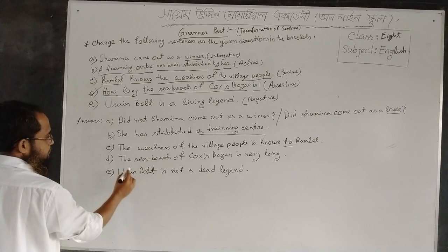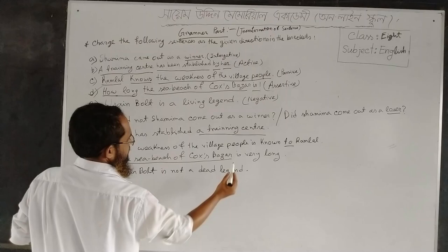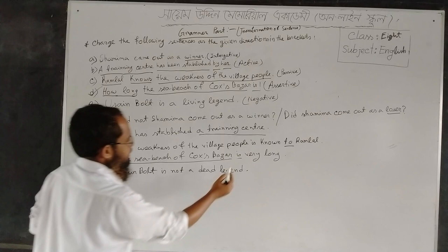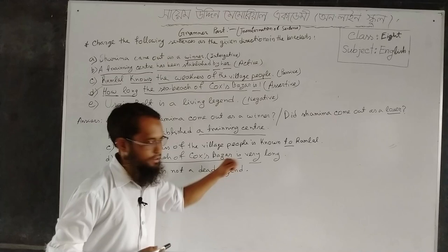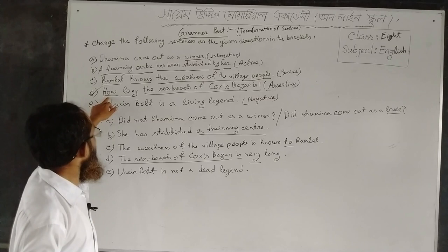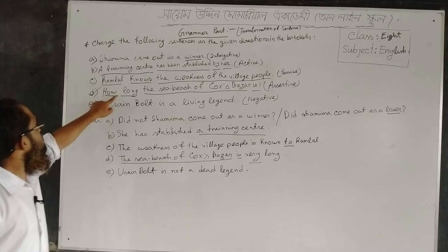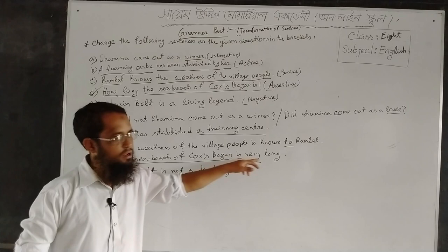The sea beach of Cox's Bazar. Now here you can see the word 'very' — it is the transformation of 'how'. If 'how' exists in the sentence, you have to use 'very'. If 'what' exists, you also have to use 'very'. Then 'long' — these two words combinedly make a phrase. The answer goes: The sea beach of Cox's Bazar is very long. It's an assertive sentence.